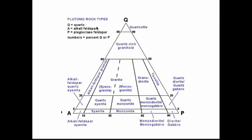So here we can see the plutonic rock types. This is a very official version of what it means to be a granite. We've got these numbers here, but this diagram is a little confusing at first, so I want to help you see how we arrange this. Notice Q stands for quartz, A for alkali feldspar, P for plagioclase. Nice and simple so far.